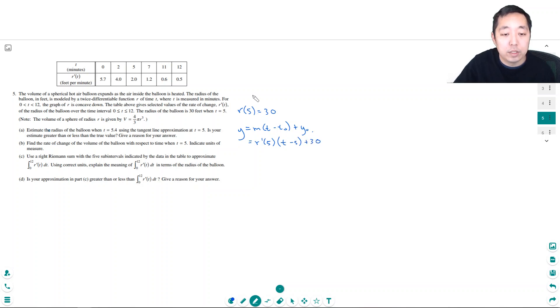So I'm going to do t minus 5 plus 30, right, because the point is 5, 30. r prime of 5 is 2, so this equals 2 times t minus 5 plus 30. So y of 5.4 is simply 2 times 0.4 plus 30. That equals 0.8 plus 30, which is 30.8 feet.